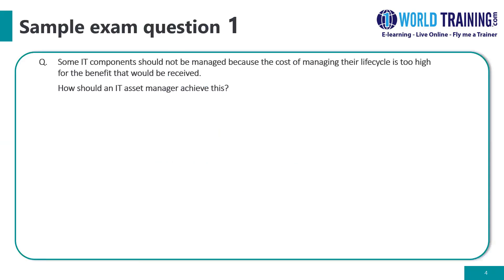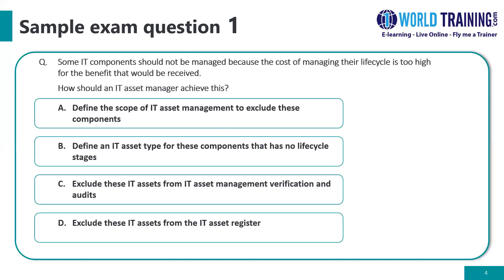We begin with question number one. Some components should not be managed because the cost of managing their life cycle is too high for the benefit that would be received. How should an IT asset manager achieve this? A: Define the scope of IT asset management to exclude these components. B: Define an IT asset type for these components so that it has no life cycle stages. C: Exclude these assets from IT asset management verification and audits. D: Exclude these assets from the IT asset register.